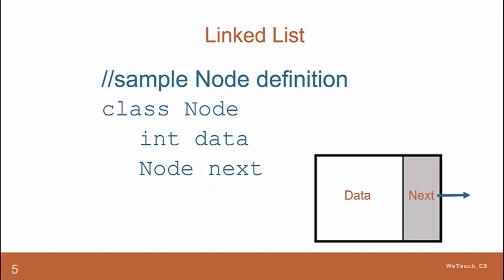A typical class definition of a node in a linked list is shown here. Class node with two instance fields: int data and node next. Data will contain whatever the data is for this object, and next is going to link to the next object in the list.